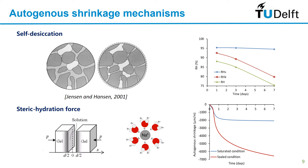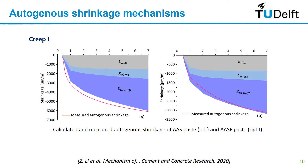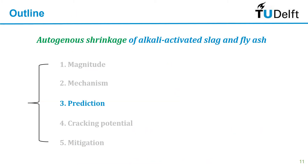Besides this force, another important reason for the high shrinkage of alkali-activated slag and slag-fly ash blending systems is creep. These materials are simply more viscous compared to Portland cement, so even under the same amount of force this material tends to shrink more, because a large part of the shrinkage is creep. We proposed a model to describe this kind of deformation. Now we know the mechanisms, so we should be able to predict the shrinkage.